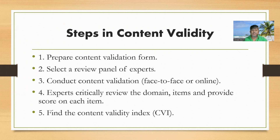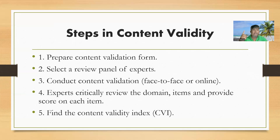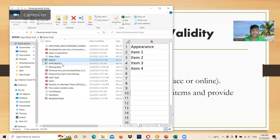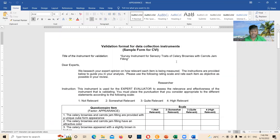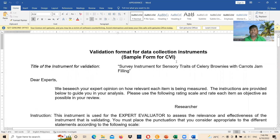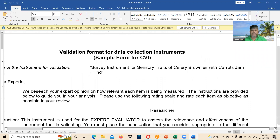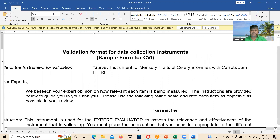Let me enumerate the steps in content validity. The first step is to prepare a content validation form — this assumes you already have a research instrument or survey questionnaire. On screen is a sample validation format for a data collection instrument used for content validity index.